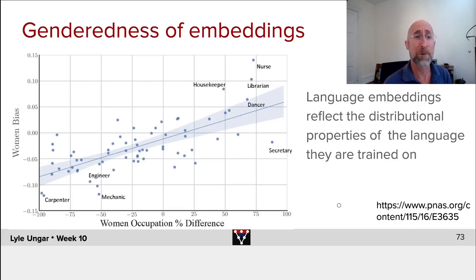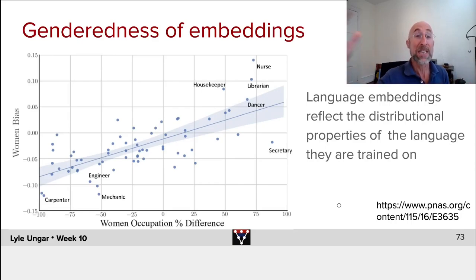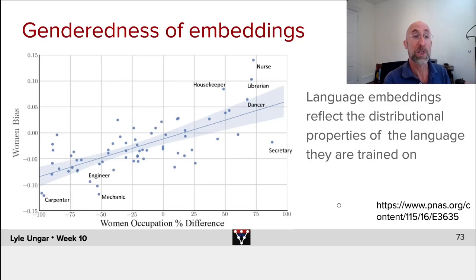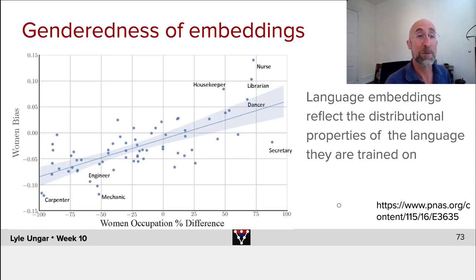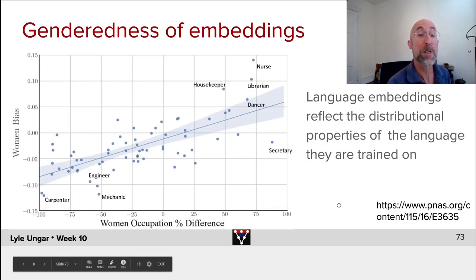Now let's look at language embeddings. We can map every embedding of each of these words on a dimension between he and she. A vector embedding closer to 'he' is more male, and one closer to 'she' is more female. We see that nurse is the most female-embedded word, and carpenter the most male-embedded one. The femaleness of the vector embeddings correlates fairly strongly with the femaleness of the profession empirically in the world.